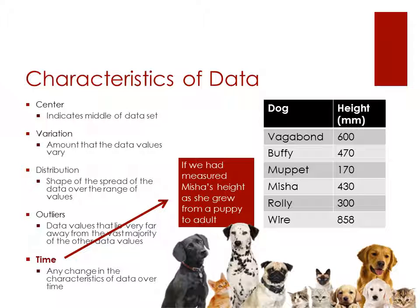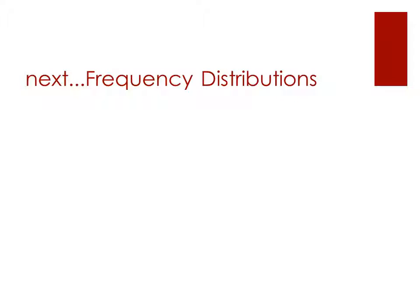The last characteristic of data is time. If we had measured Misha's height as she grew from a puppy to an adult, we would then have a characteristic of time included in our data. In this particular example, however, we do not have a time measurement. This concludes our review of the characteristics of data. Next up is frequency distributions.